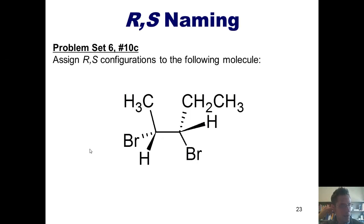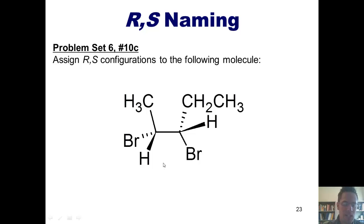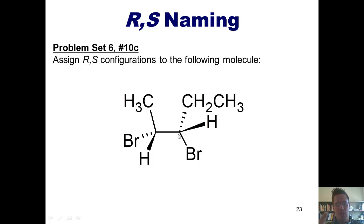Let's look at an example that's a little bit more complicated. I want you to assign R and S configurations to this molecule. Why is this more complicated? The reason is because this molecule has two stereocenters, one located here and the other located here. In order to assign R and S to this molecule, we have to do so to each of its individual stereocenters.